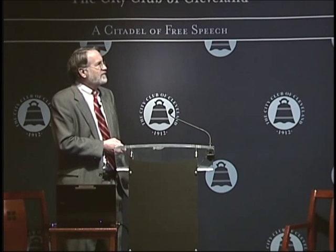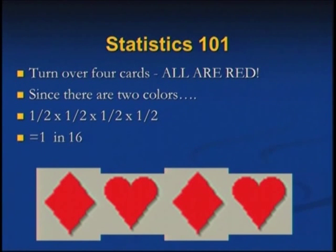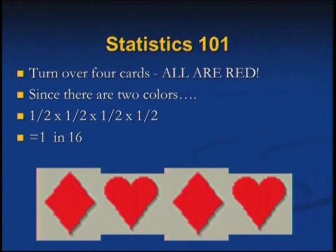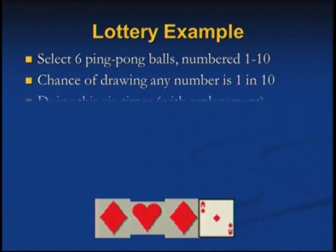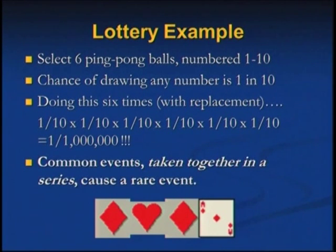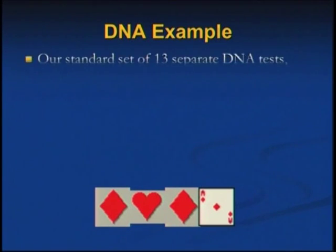Statistics 101: if we get a match at each locus, and suppose we're looking at just four sites with one-in-two odds each, and they're independent of each other — that's the critical point — the odds of matching all four are one in 16. Like a lottery example using one through 10: all of a sudden you're up to one in a million chances of getting all the same. DNA works the same way.